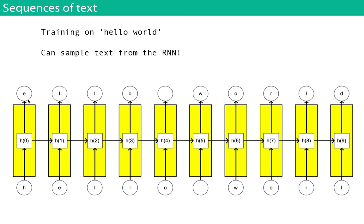Once trained, we can sample text from the RNN. We seed it with an initial character like H. The network predicts what it thinks the next character should be, giving a probability distribution over all characters. We sample from that distribution, feed the sampled character back into the RNN, predict another character, and keep repeating. If you do that on large text corpora, it will begin to produce text that looks like it came from that corpus.